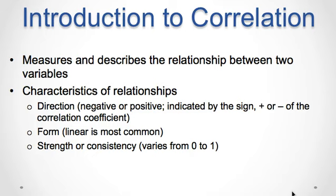The second characteristic is the form of the relationship. A linear relationship is most common. And third, the strength of the relationship. The correlation coefficient determines the strength or magnitude of the relationship, which varies from 0 to plus or minus 1.